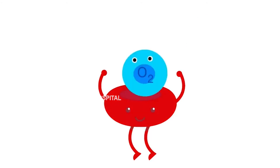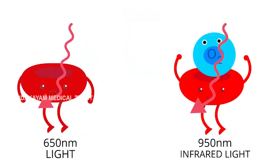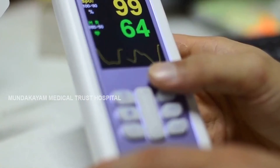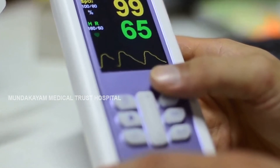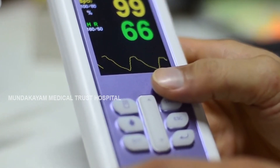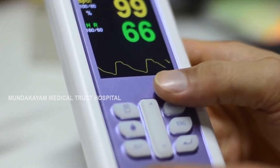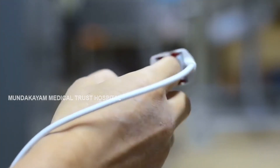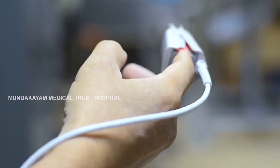Two light-emitting diodes — red and infrared — are positioned opposite their respective detectors through 5 to 10 mm of tissue. Measurements of relative light absorption are made multiple times every second, processed by the machine to give a new reading every 0.5 to 1 second, averaged over the last 3 seconds.